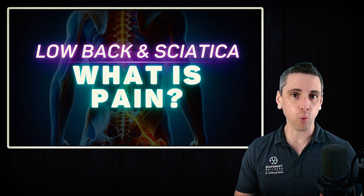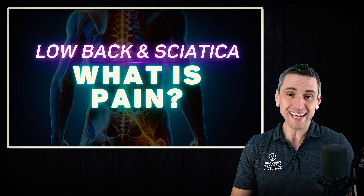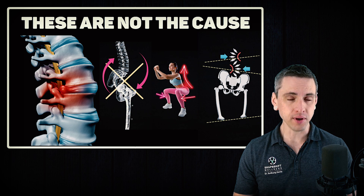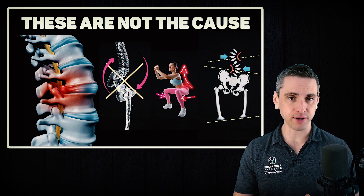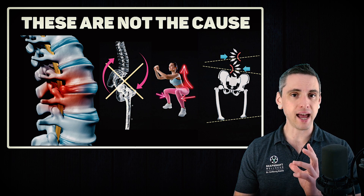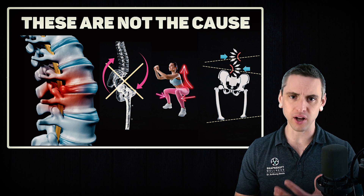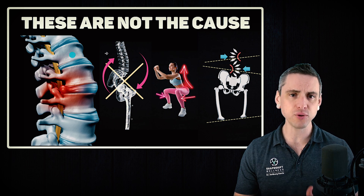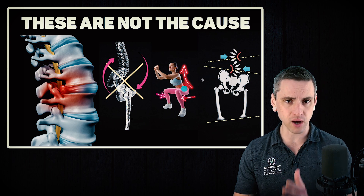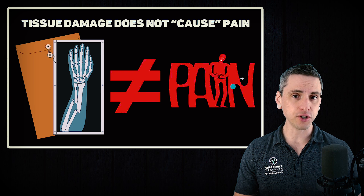Today I'm going to explain what causes chronic back pain and sciatica. I will prove to you that tissue damage like disc herniations, muscle tears, nerve irritation, pelvic tilt, alignment, core stability — all the tissue stuff that we're obsessed about is not causing pain.